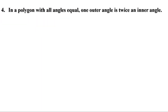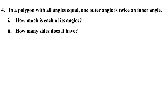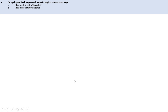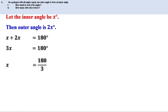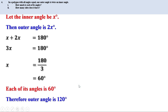Fourth problem: in a polygon with all angles equal, one outer angle is twice an inner angle. How much is each angle? Let the inner angle be x degrees. Then the outer angle is 2x degrees. Since their sum is 180 degrees: x + 2x = 180, so 3x = 180, giving x = 60 degrees. Therefore the inner angle is 60 degrees and the outer angle is 120 degrees.